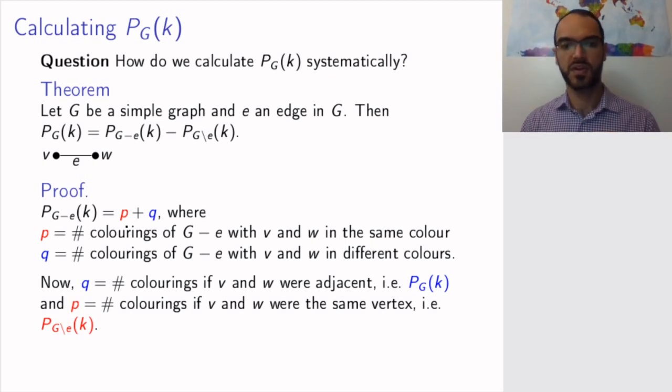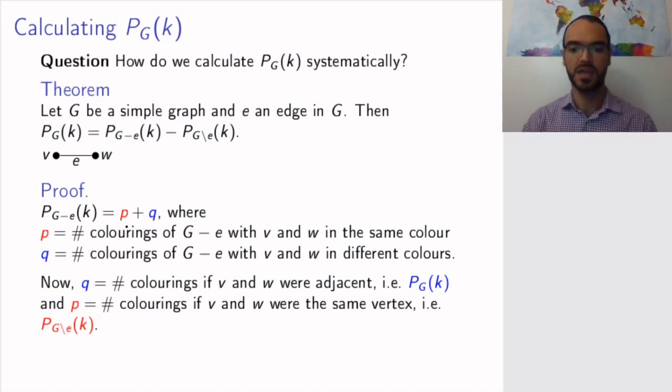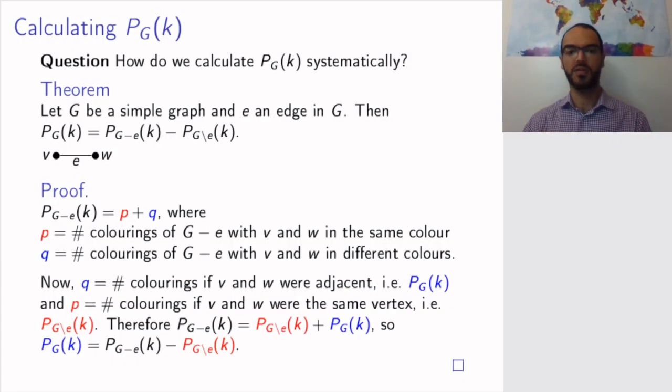So because of this, because colorings with different colors is equivalent to coloring with the vertices adjacent, colorings with the same color equivalent to colorings with the vertices are the same, we get that the number of colorings for G minus E is this red number plus the blue number. And our theorem was about the blue number, and now just by shuffling algebraically this equation, we get that P_G(k) is P_{G-e}(k) minus P_{G/e}(k).